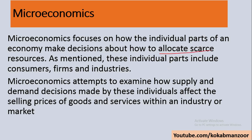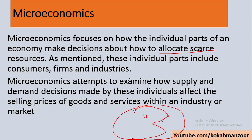Microeconomics is about the allocation of resources which are scarce. Resources are always scarce — think about how much you have in terms of money, land, or capital, versus how many wants you have. Your wants are bigger than your resources, so you have a lot of wants and very few resources. That's why we say resources are scarce.